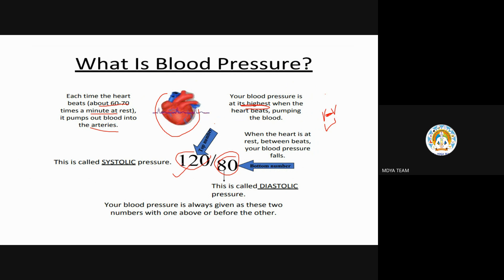The upper number is systolic. A trick to remember: diastolic starts with 'D' like 'decreasing' — that is 80, the lower value. And the highest level is systolic. Your blood pressure is always given as these two numbers, with the systolic above or before the diastolic.